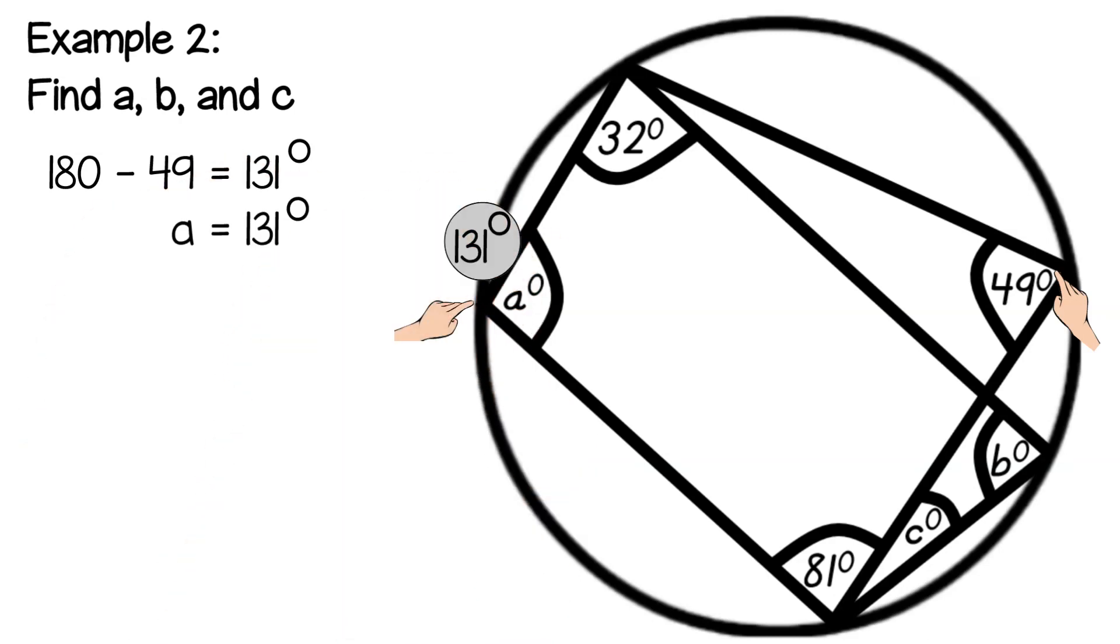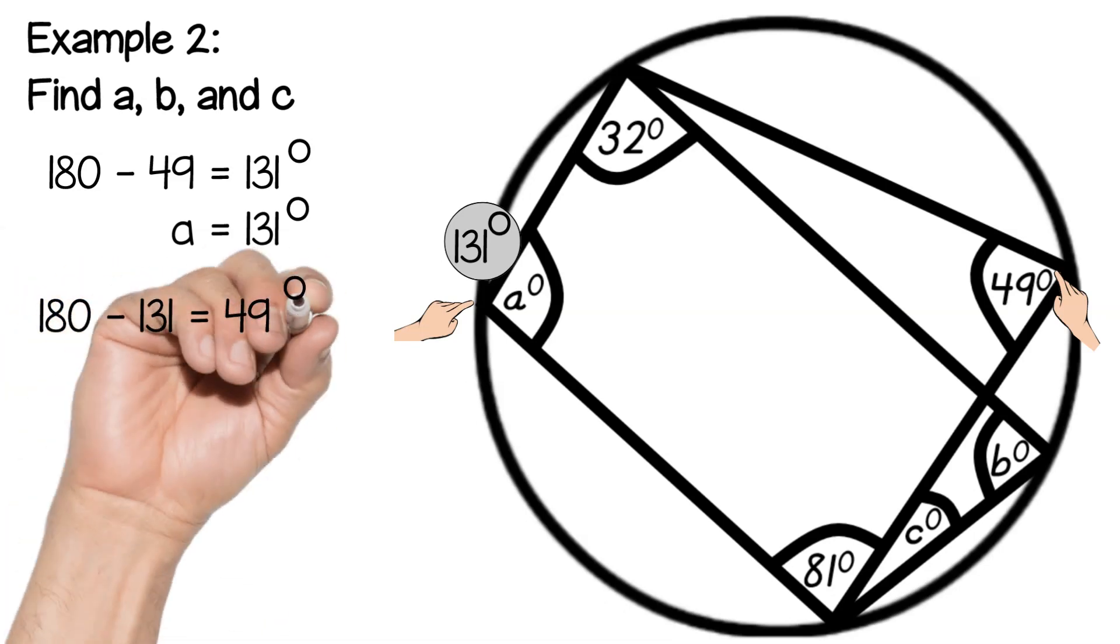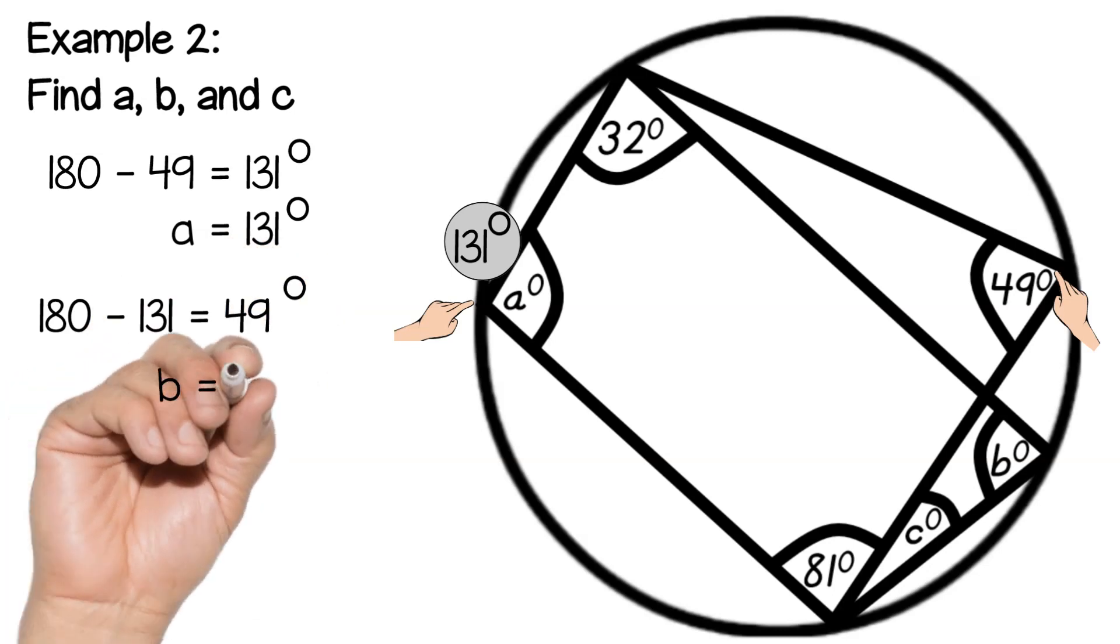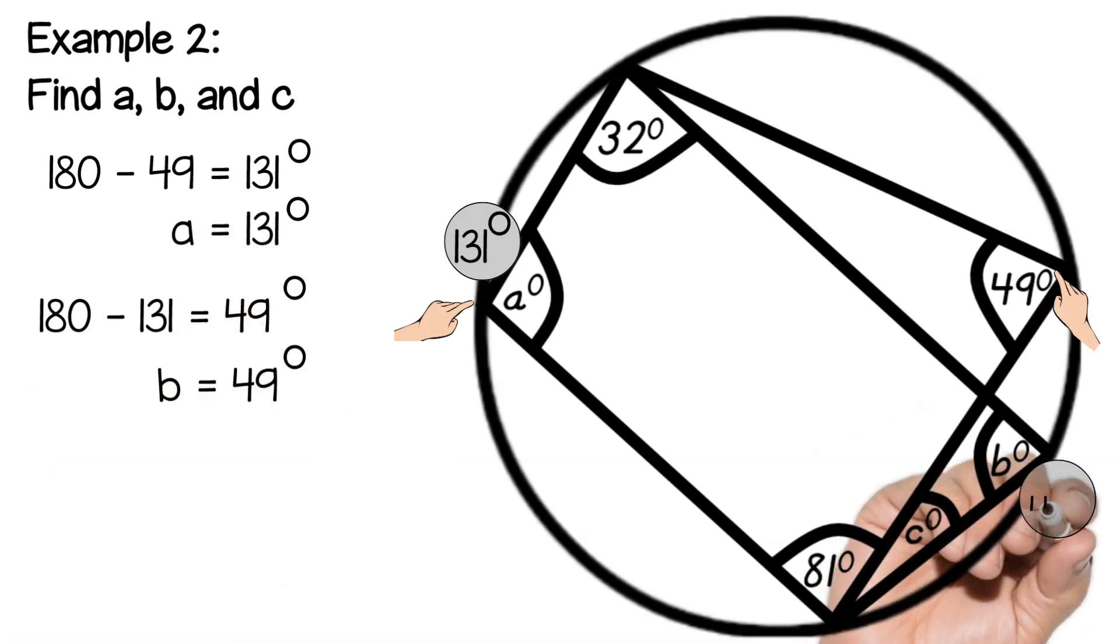Now if you look at your b, that's actually in the corner of a quadrilateral and the angle opposite that is a so I again can calculate 180 minus 131 gives us 49 so b is 49. I'm going to put that into my diagram as well.